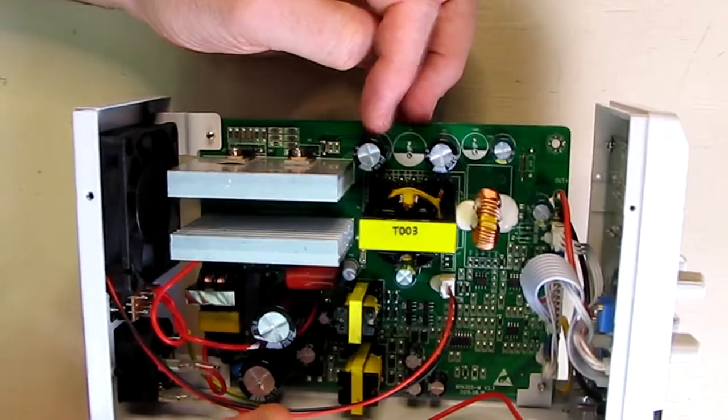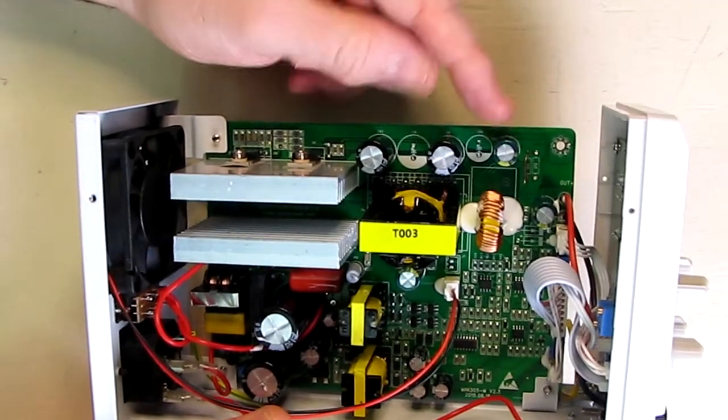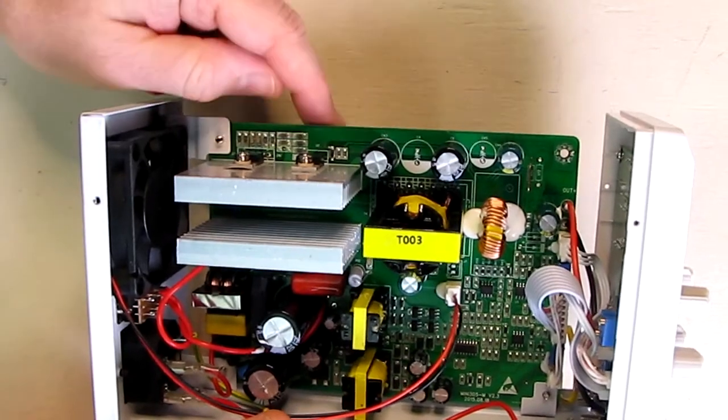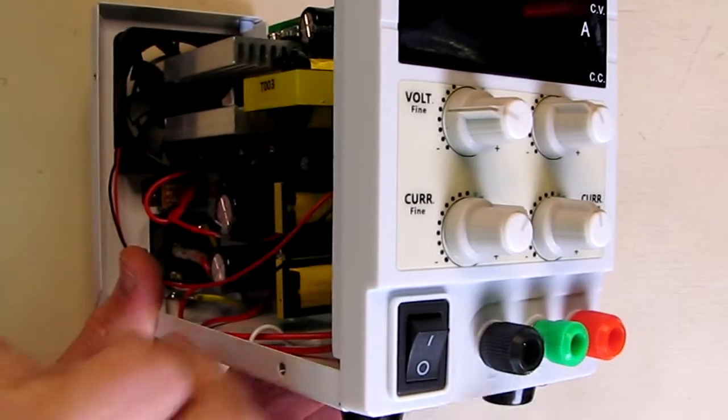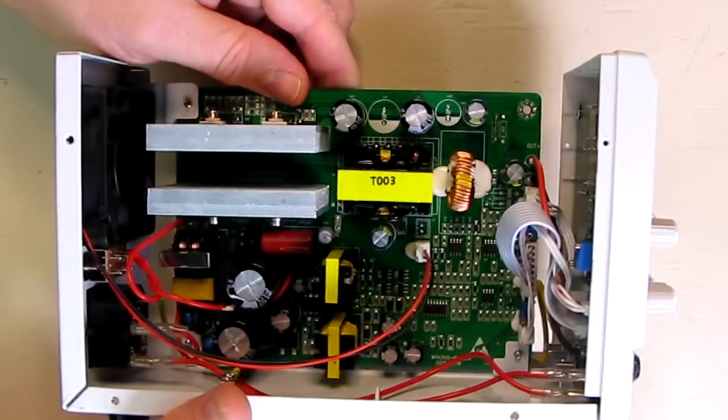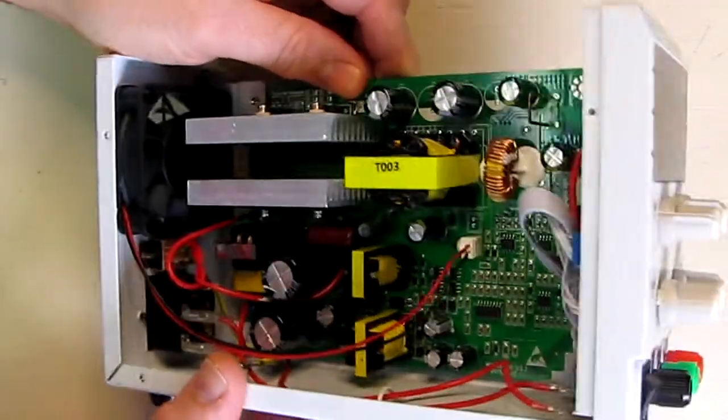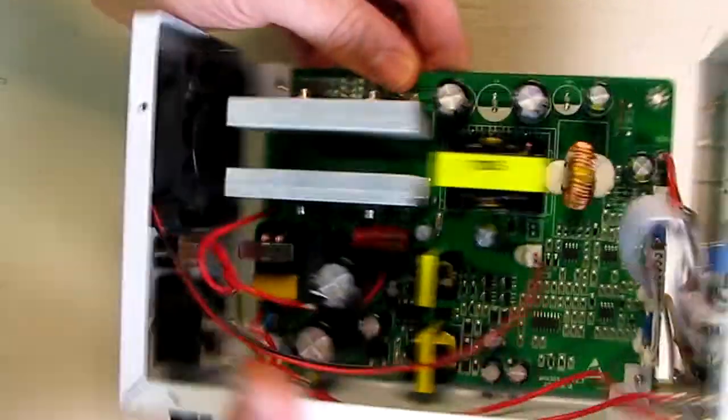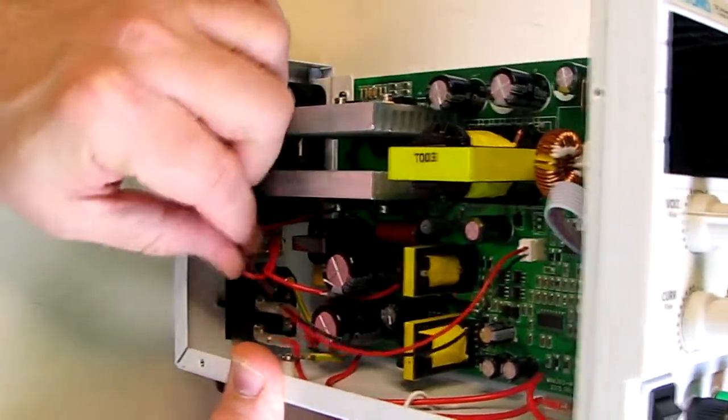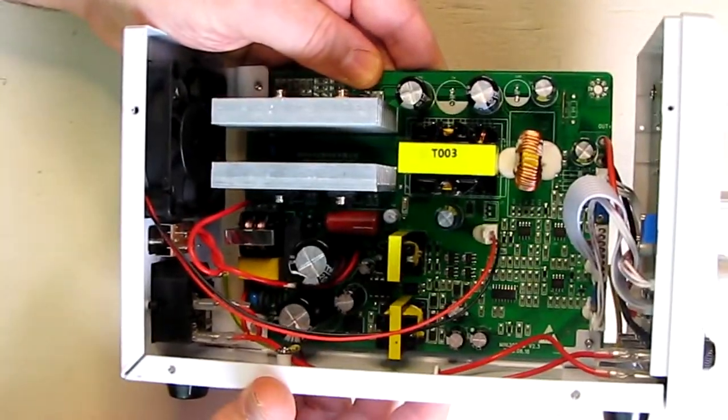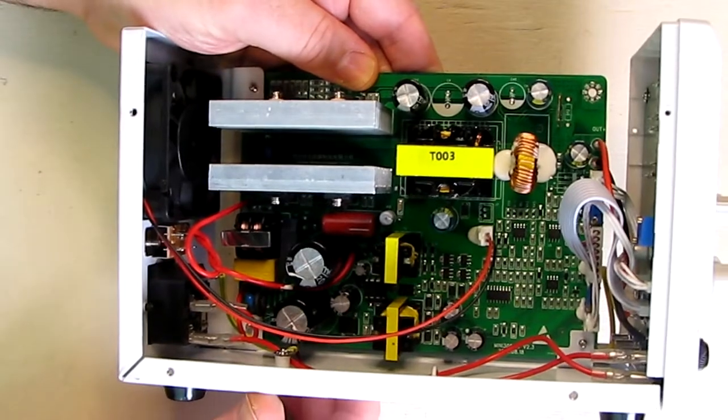You can see right here on the output there are some filter capacitors, and they do mention that in the listing. That's nice, so that is providing the filtration of the final output on those terminals right there. This is very high quality. I'm really impressed with this. And the fan that you see in the back - there's the fan right there and there's where it plugs in. They have some glue on there so it can't move, and that's a variable speed fan that I demonstrated. Very nice.